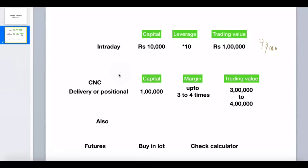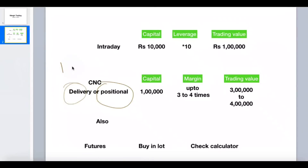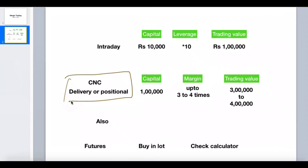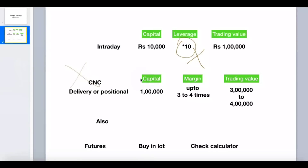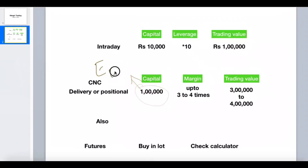That's where the CNC order comes in — also called delivery or positional. You buy today and can sell tomorrow, day after tomorrow, and so on — not just intraday. But for these types of trades you don't get any margin or leverage. Cash and carry — whatever cash you have, say 1 lakh, you can only buy stocks worth that much. You can't carry forward unless you have the full money. That's when margin trading comes into the picture.